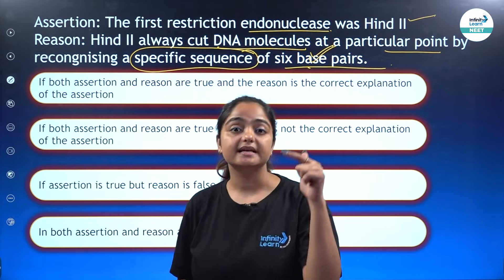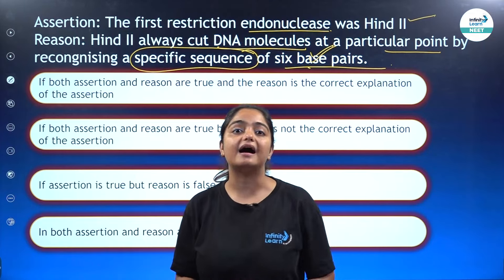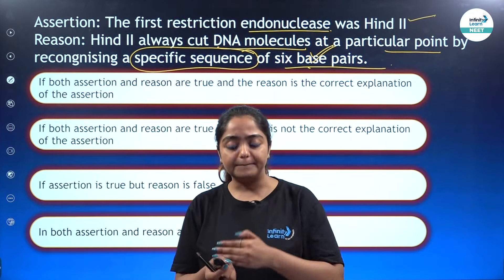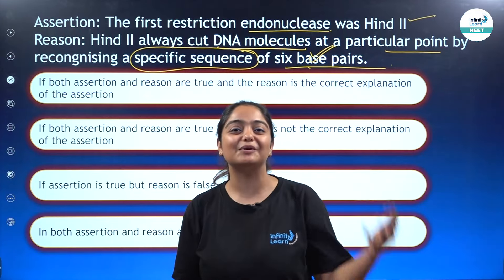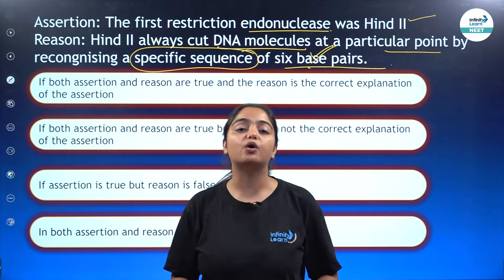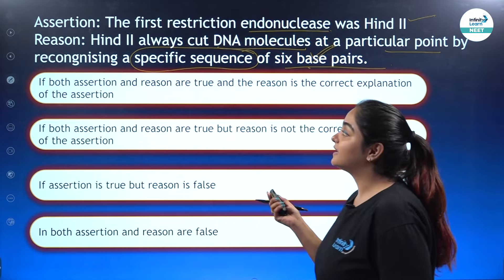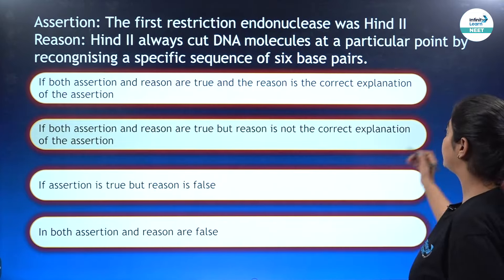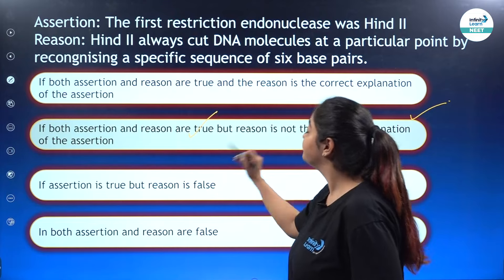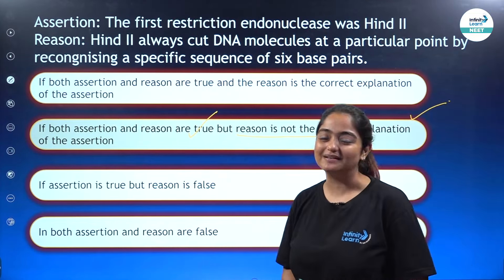Why is reason not the correct explanation? Even though HindII is able to cut DNA after recognizing a specific sequence of six base pairs, that is not the reason it was first recognized. It was recognized first, and then we got to know about the characteristics of HindII. So the correct answer for this question is option B — both assertion and reason are true, but reason is not the correct explanation of the assertion.